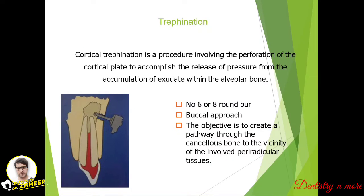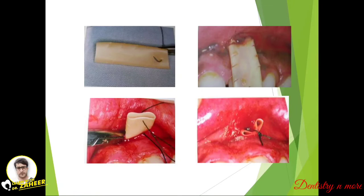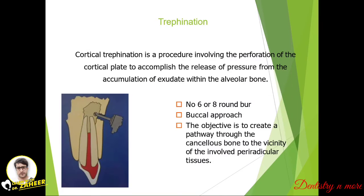Cortical trefination is a procedure involving perforation of the cortical plate to accomplish the release of pressure. Similar to I&D but it goes into the cortical bone. The idea is to remove exudate formed within the alveolar bone. We can use a number 6 or 8 burr, mostly from the buccal side. The objective is to create a pathway through the cancellous bone to the vicinity of the involved peri-radicular tissues.